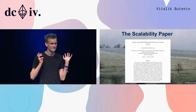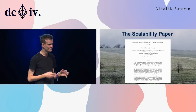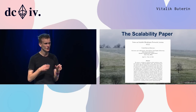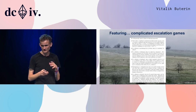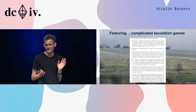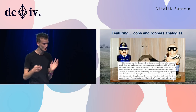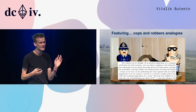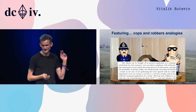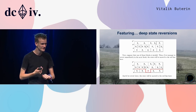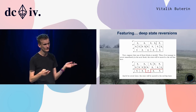There was also a scalability paper from 2015 that tried to formalize the idea of quadratic sharding and super-quadratic sharding, but it was very complicated — it had escalation games inspired by ideas of how escalation works in court systems, an analogy Joseph from Plasma really loves to use. Applied to the base layer, it also included deep state reversions, where if something goes wrong, large portions of state could get reverted even fairly far into the future.